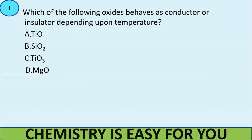So the first question here is which of the following oxides behaves as conductor or insulator depending upon temperature? So we have four options here: TiO, SiO2, TiO3 and MgO. These kinds of questions are pretty confusing because they look very similar. In your mind the properties also might be very similar. But the answer here is option C, TiO3. You can keep this in mind, write this down in a paper because this would be helpful for you in your final revision.